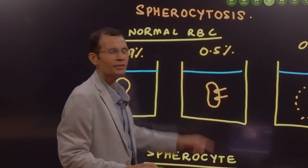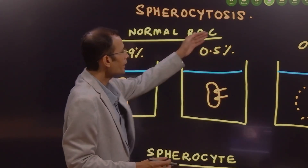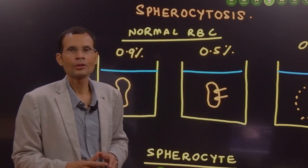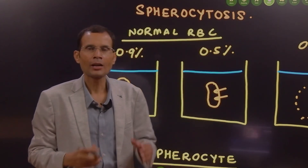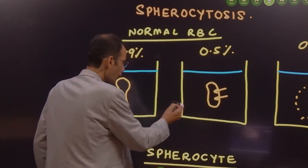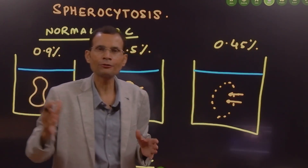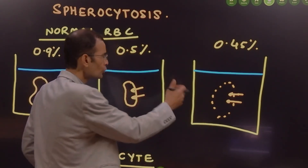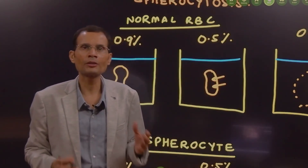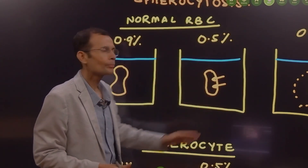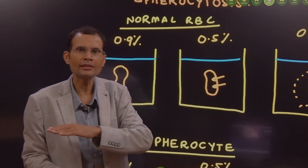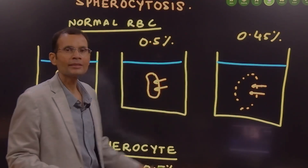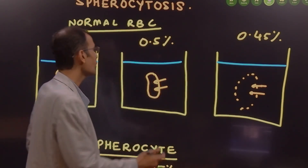But if you place an RBC in distilled water or a hypotonic solution — like 0.5% sodium chloride — water will enter the RBC and it will swell up. With a more hypotonic solution, more water enters faster and the RBC breaks down even earlier. This is how osmotic fragility is tested — by placing RBCs in solutions of various tonicities to see when the RBC breaks down.